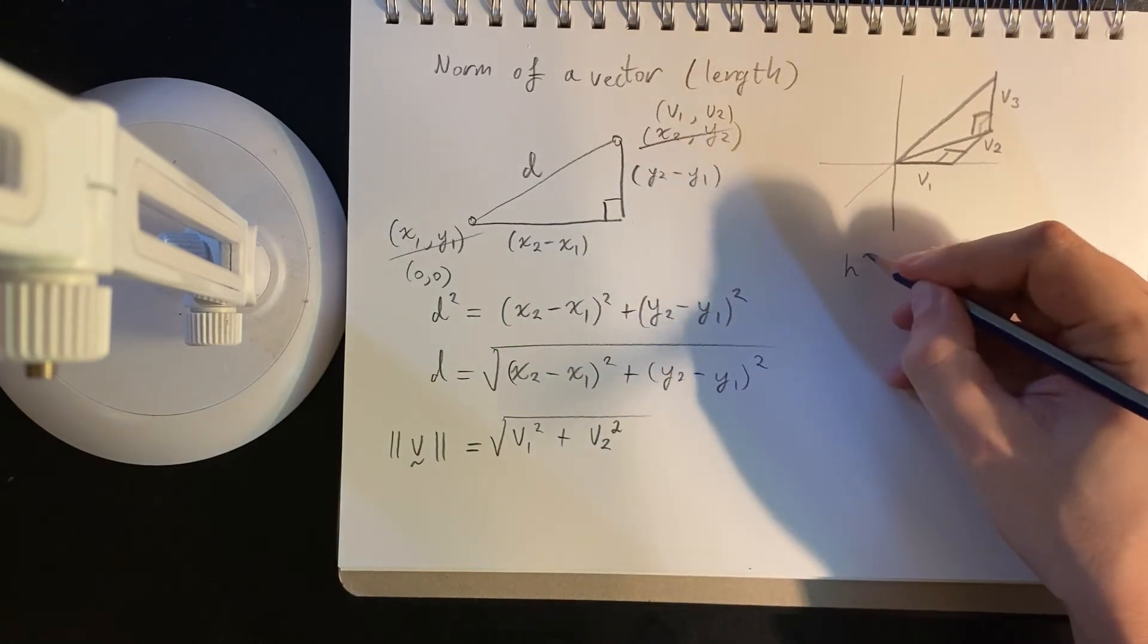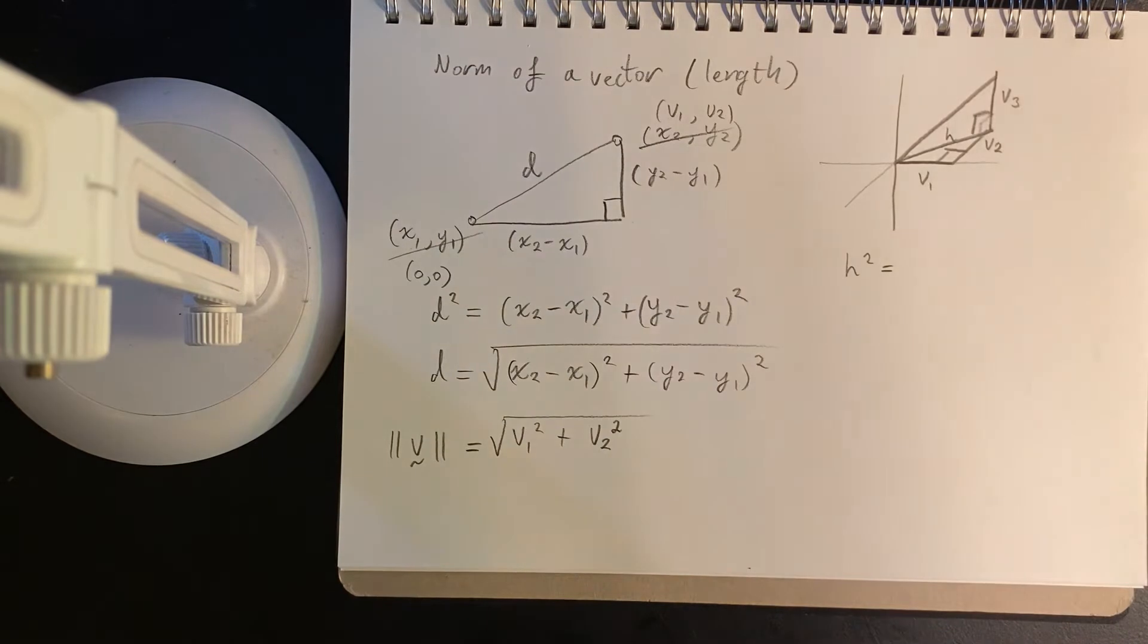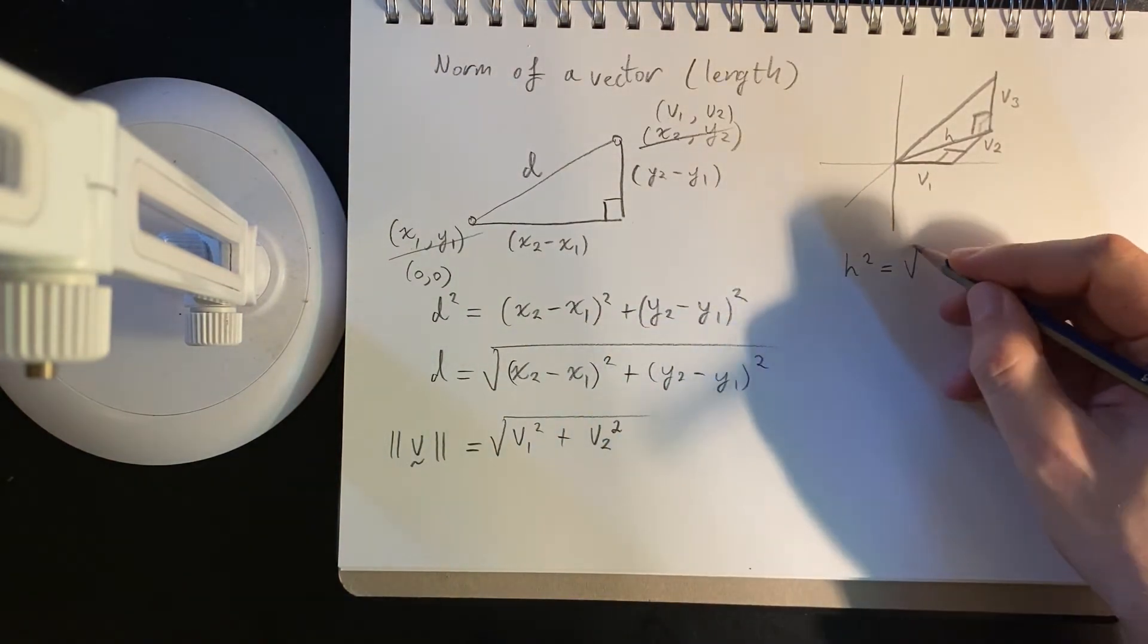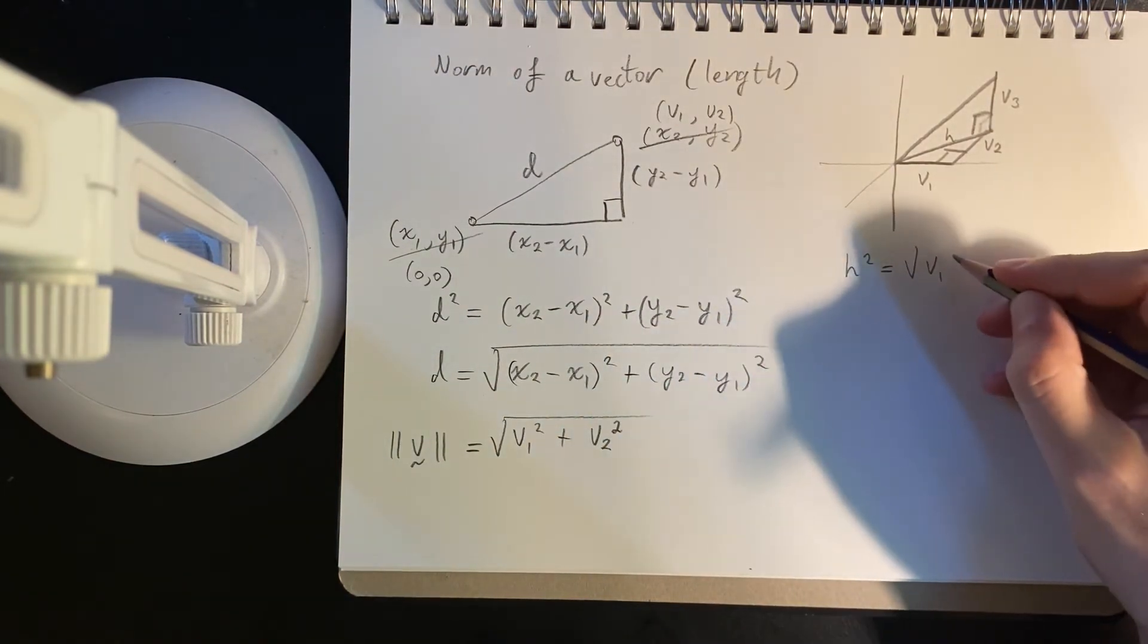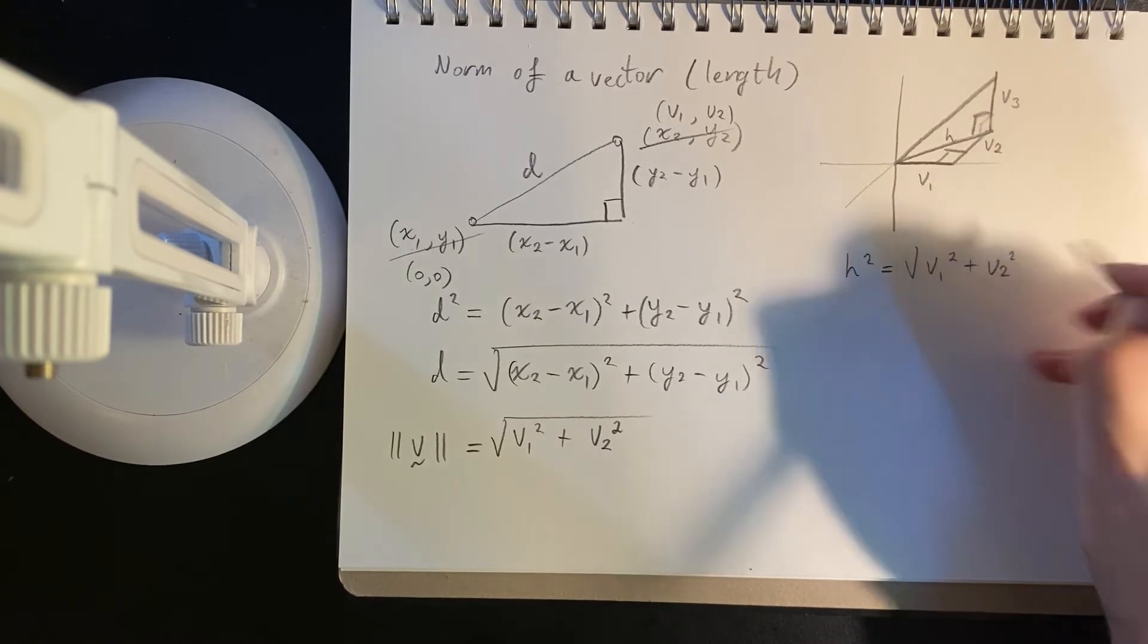So we have this hypotenuse, we say the hypotenuse squared, this is the hypotenuse on the xy plane down here, is equal to this v1 length, v2 length,